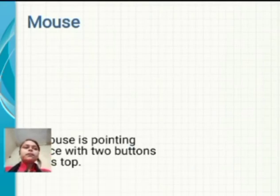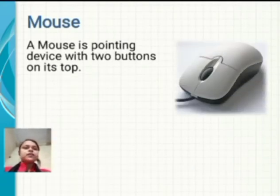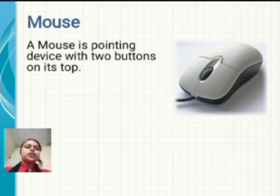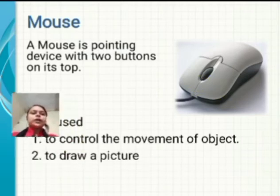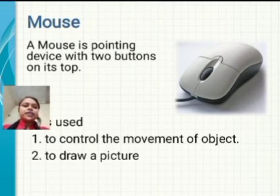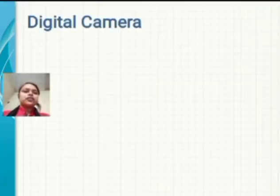What is a mouse? A mouse is a pointing device with two buttons on its top. It is used to control the movement of objects and to draw a picture.